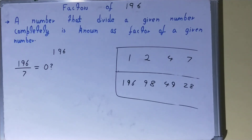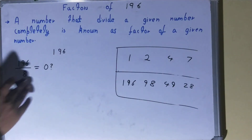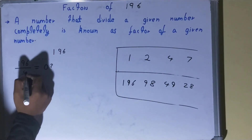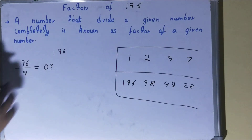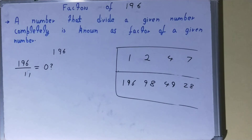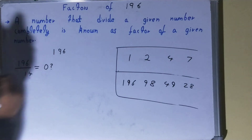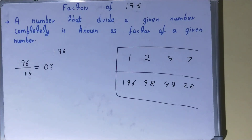After seven, we try eight — not possible. Nine — not possible. Ten — not possible. Eleven — not possible. Twelve — not possible. Thirteen — not possible.